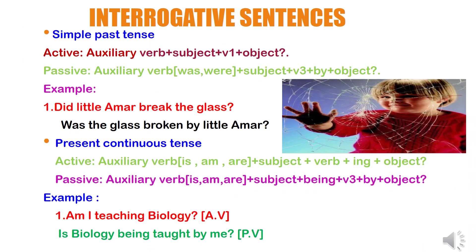Simple past tense in interrogative sentence. 'Did' is the past tense auxiliary verb; was/were are used based on the subject. In active voice: auxiliary verb plus subject plus V1 plus object. In passive voice: was/were plus subject plus V3 plus by plus object. Example — in active voice: 'Did little Amir break the glass?' In passive voice: 'Was the glass broken by little Amir?' — 'glass' is singular so use 'was'. If plural, use 'were'. 'Broken' is the V3 form of the verb.